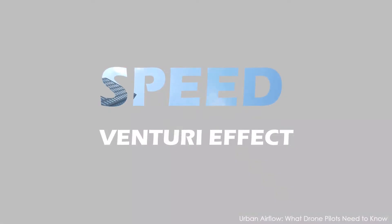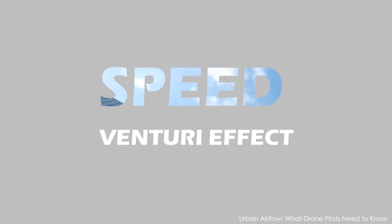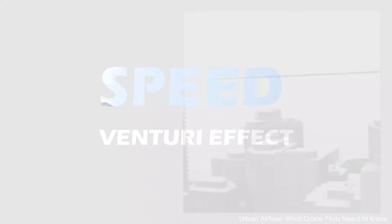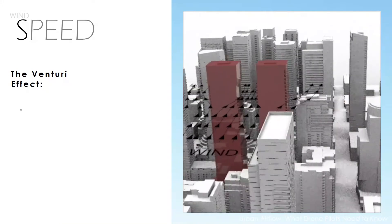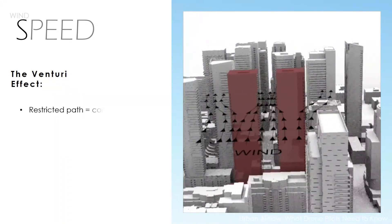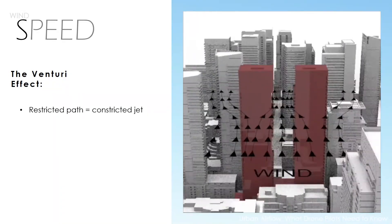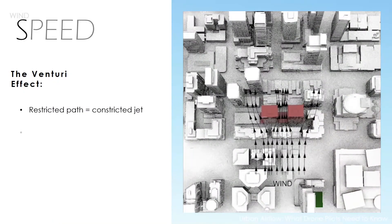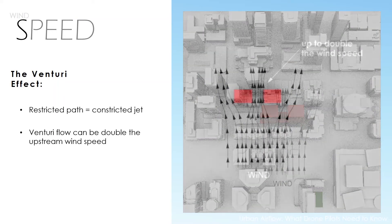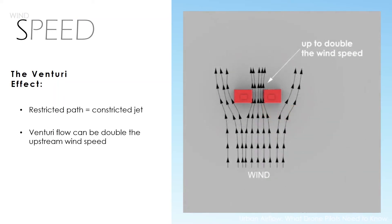Due to disturbances caused by urban structures, wind speed can increase locally. If the spacing between buildings restricts the path of the wind, the air flowing through the constriction may increase in speed, causing a venturi effect. The wind speed may increase by as much as double the speed of the upstream wind. This can occur at any building height, including pedestrian level.